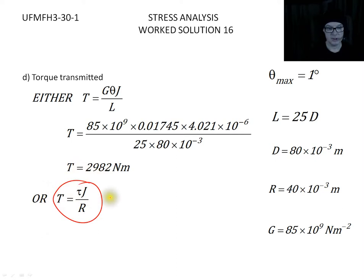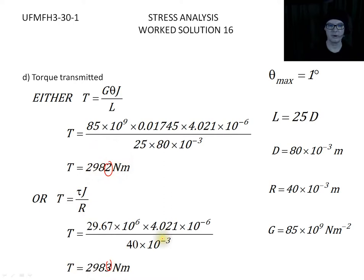Alternatively, we could have used the middle two columns where we took the shear calculation that we calculated and then divided it by the radius. In this case, notice we do end up with a slightly different result, at least in terms of the fourth significant figure.